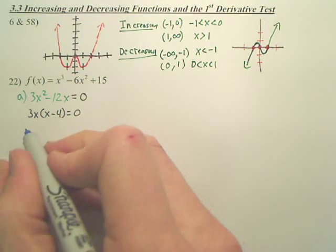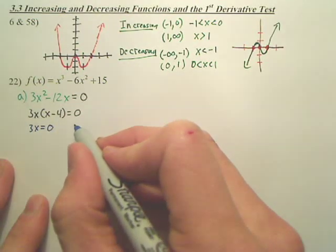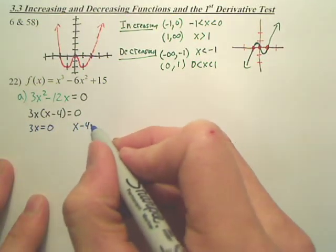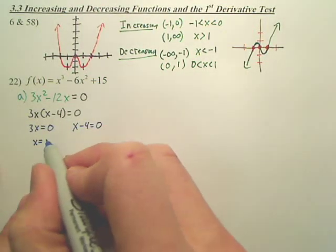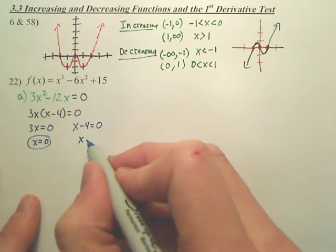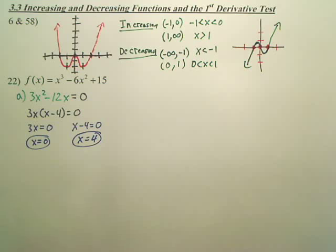What do you got? This one's going to be 3x equals 0, and this one, x minus 4 is 0. So this one, I heard some of you, this one is 0, and this one is 4. Now, the goal here, those are the critical numbers.